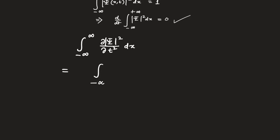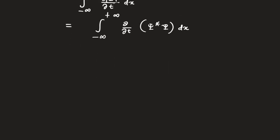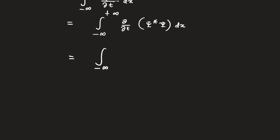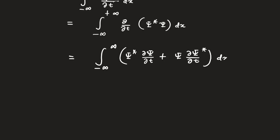Now we want to check whether the integral of del/del t of |ψ|² dx is also zero. This is basically the integral from minus infinity to plus infinity of del/del t of ψ* ψ dx, which equals the integral of ψ* del ψ/del t plus ψ del ψ*/del t dx. This is why we calculated del ψ/del t earlier.